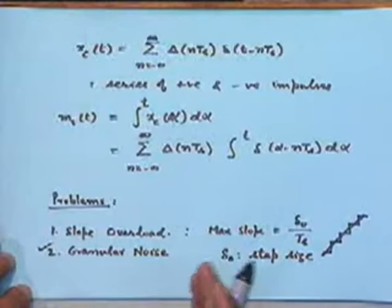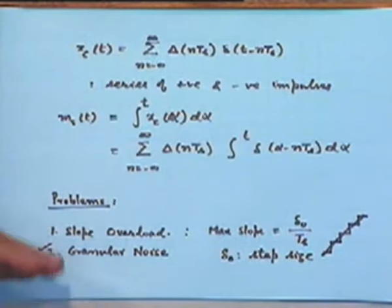Once you have fixed the impulse strength, the step size is fixed in that particular delta modulator and is going to be constant — let that constant value be δ₀, and the maximum slope you can build up is δ₀/T_s. A larger step will mean more error, and that is in fact the second kind of problem — the granular noise problem. So these two problems are contradictory: if you try to improve one, the other gets worse. For now, let us limit ourselves to the slope overload problem.